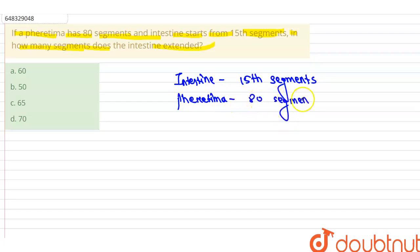So there are four options given: first option is about 60, then 50, then 65, and then 70. So the earthworm - we know the earthworm has a total of how many segments? Earthworm has 100 to...